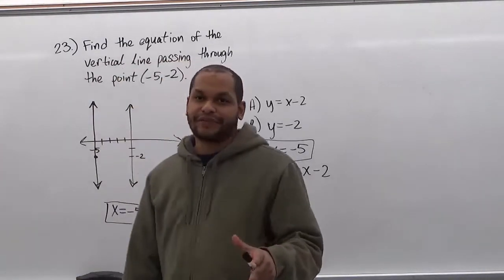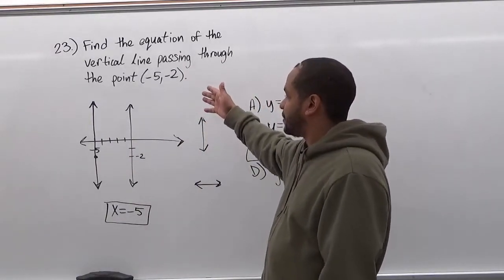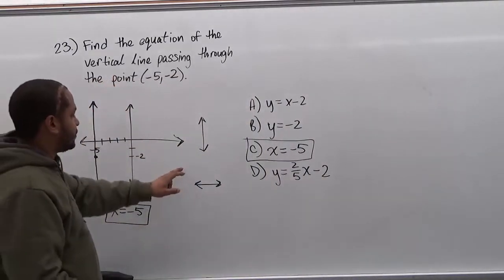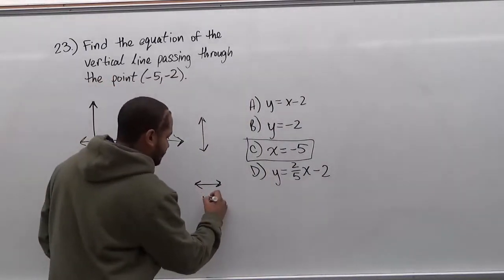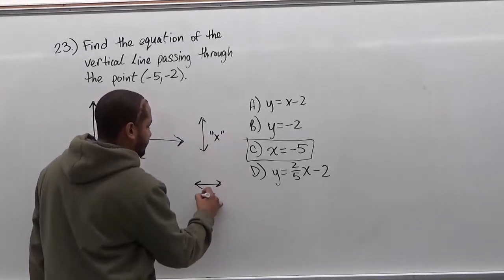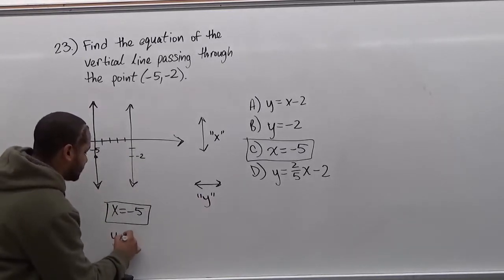Now if we were trying to find the horizontal line going through the same exact point of negative 5, negative 2, we would have to make an equation for the y value, because the y values are horizontal lines, while the x values are vertical lines. So here we do the same exact thing for the horizontal line.